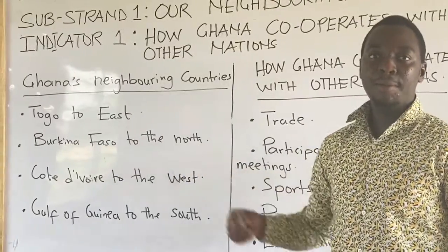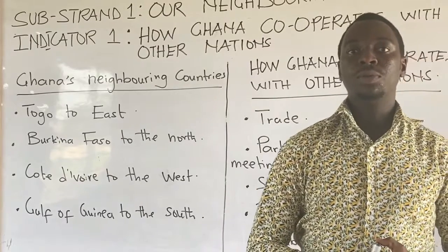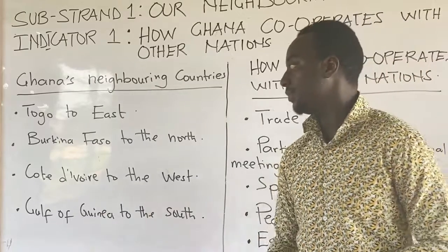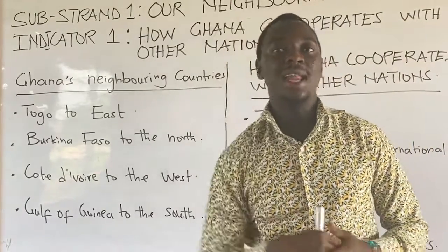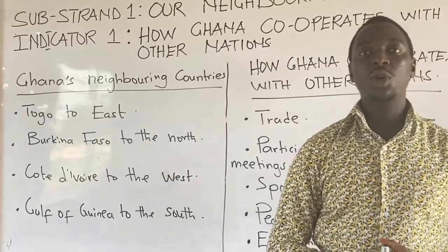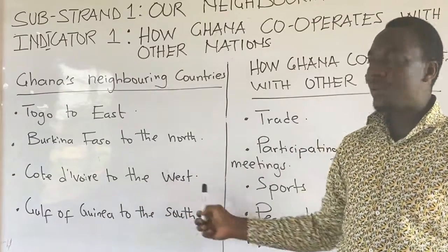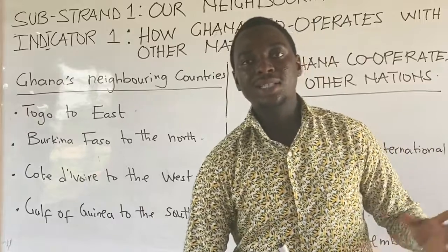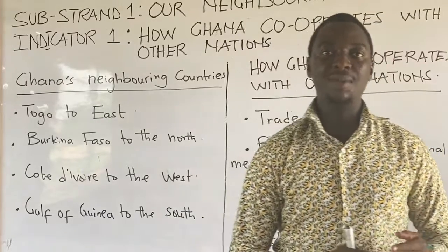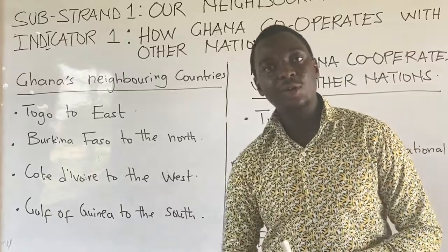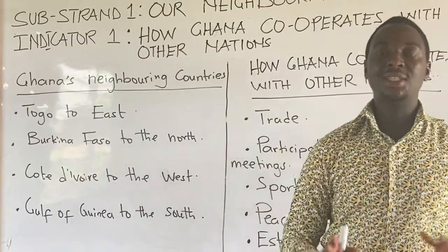Togo is to the eastern part of Ghana — if you look at the eastern borders of Ghana, we share borders with Togo, so Togo is our close neighbor. Burkina Faso is to the northern part of Ghana. Cote d'Ivoire is to the western part of Ghana. To the southern part, we have the Gulf of Guinea, which is not a country — it is the sea, the ocean.